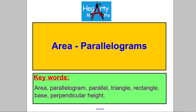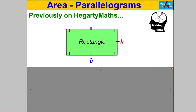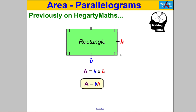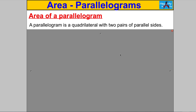Let's start with a piece of knowledge I need you familiar with — something we've done previously on HegartyMaths. Can you remember the formula for the area of a rectangle with base length B and perpendicular height H? Hopefully you can remember that it's simply the base multiplied by the perpendicular height. That's how you get the area of a rectangle, and it's something we're going to need in a second.